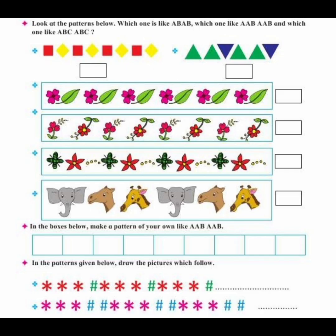Now let's solve this. Look at the patterns below and identify its type. The first one is AB type. Second one is AAB type. Third one is AB type. Fourth one is also AB type. Fifth and the sixth one is ABC type.